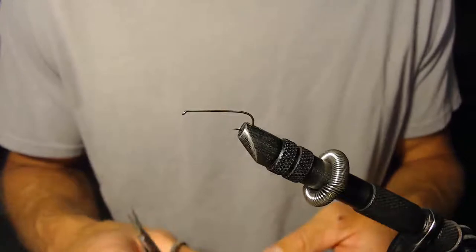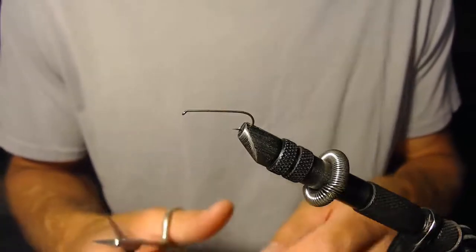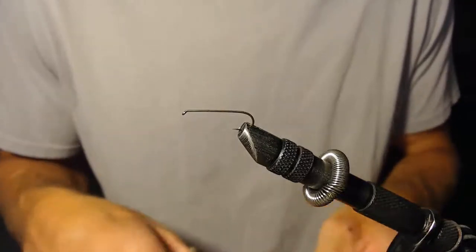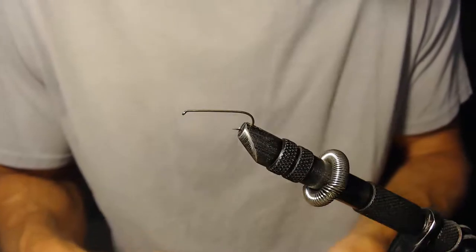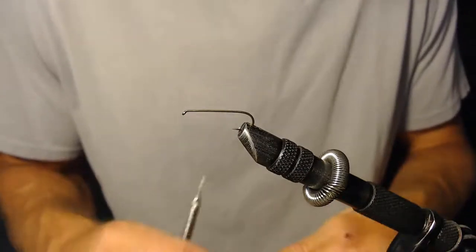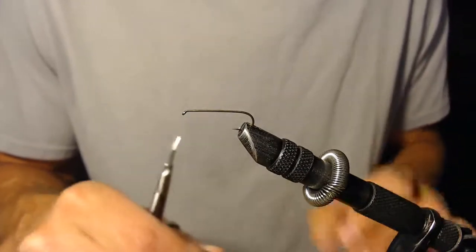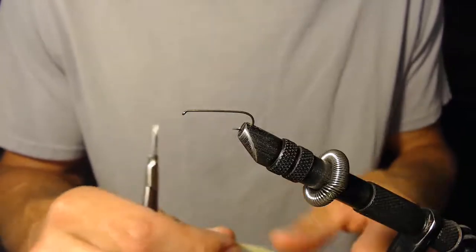Okay, for this fly we're going to tie a foam grasshopper pattern. This is a pattern that I like to fish with, pretty effective, nice lifelike appearance to it, and really a pretty easy tie.